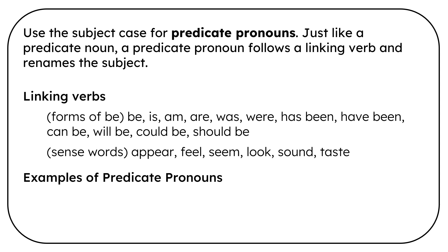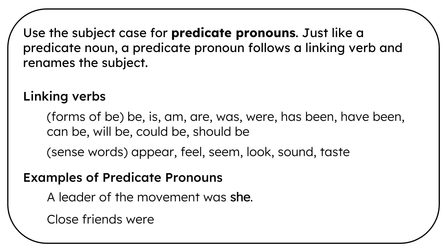Here are examples of predicate pronouns. A leader of the movement was she. She is linked back to leader. Close friends were they. They is linked back to friends.